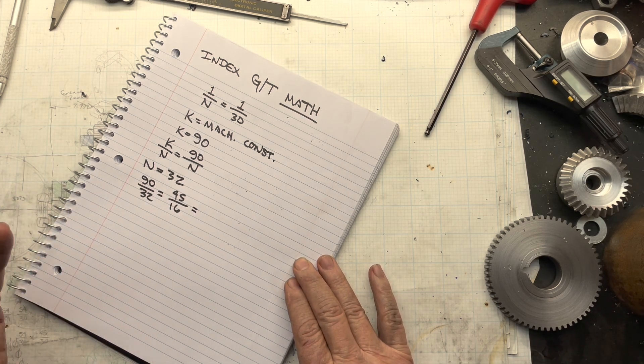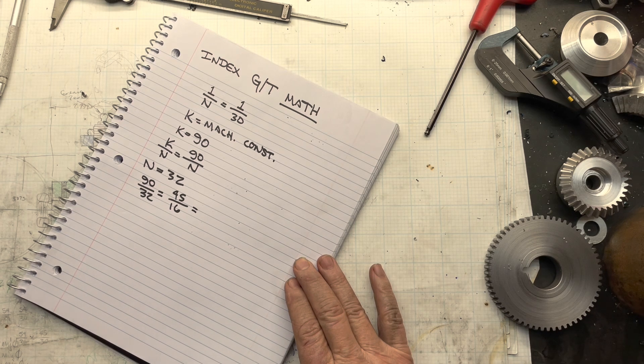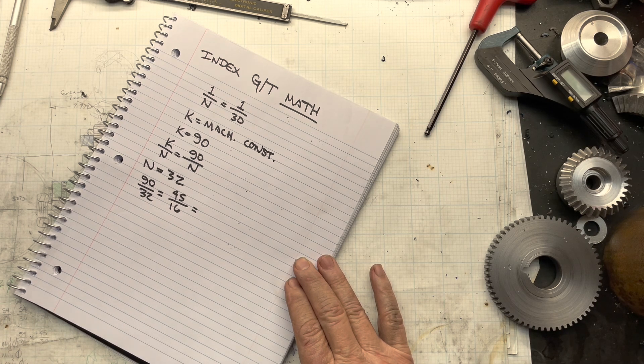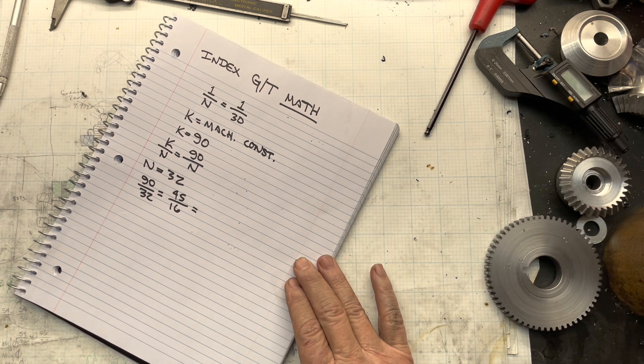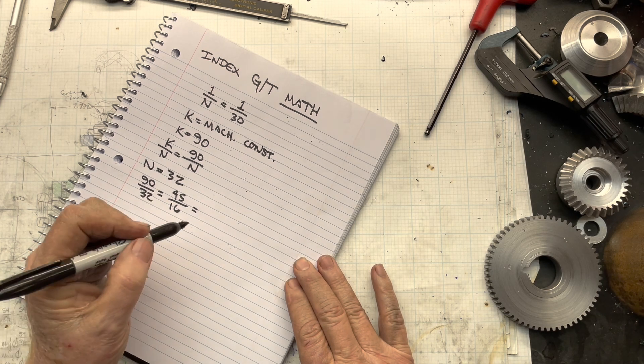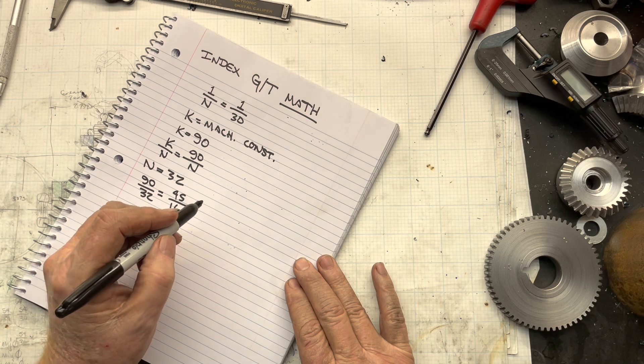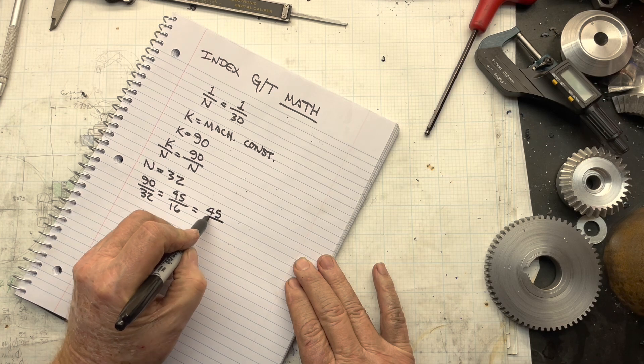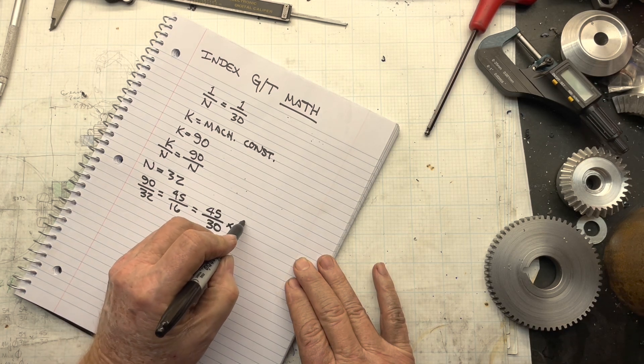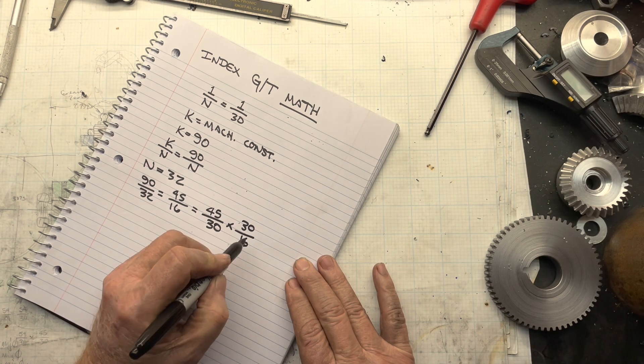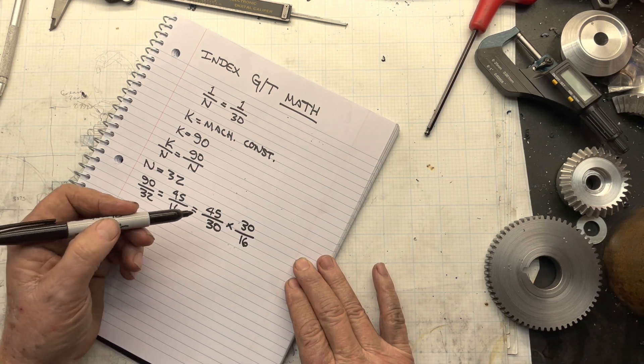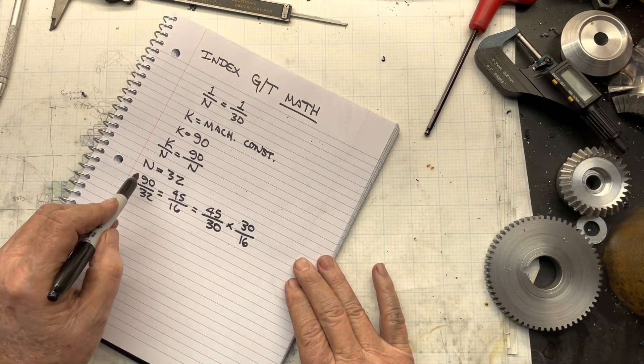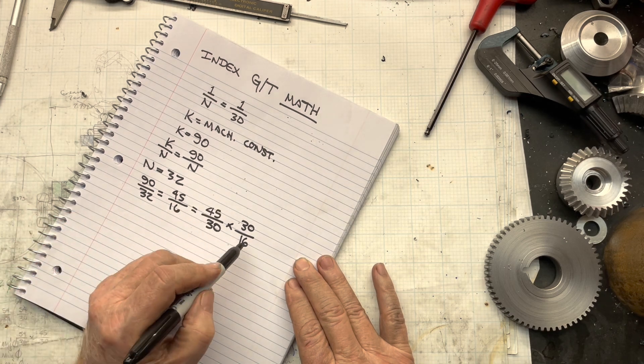But what I can do, I can multiply or divide the numerator and denominator of a fraction by the same number, particularly if the number is an integer or an integer fraction. In this case, I can multiply and divide by 30 and say that's 45 over 30 times 30 over 16. And when you do the math, this all comes out to the same decimal number, the same ratio.